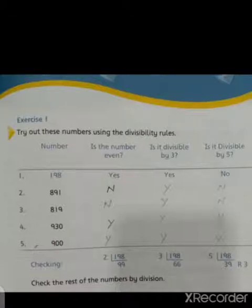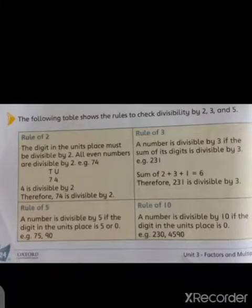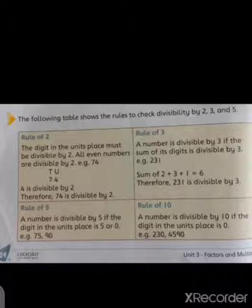Now move to the next: Is it divisible by 3? We will check whether these numbers are divisible by 3 or not. For this, we have to read the rule of 3. The rule of 3 is: a number is divisible by 3 if the sum of its digits is divisible by 3. We have to add the digits, and if the sum is divisible by 3, then the whole number is divisible by 3.